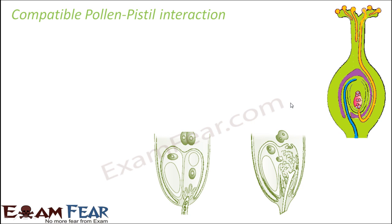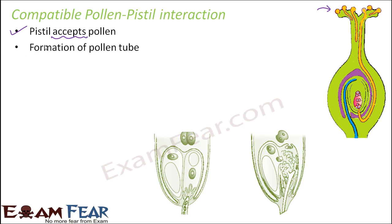Let us look at the compatible scenario. The pollen has landed on the stigma, the stigma recognizes the pollen and says yes, these are the right type of pollen, so the pistil will accept them. Once the pollen is accepted, pollen tube formation takes place. When the pollen grain falls on the stigma it starts germinating, and the pollen tube is formed through one of the germ pores.